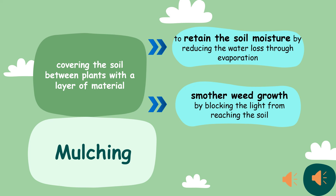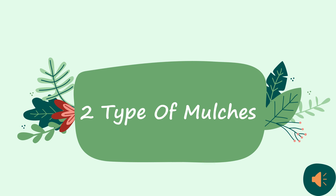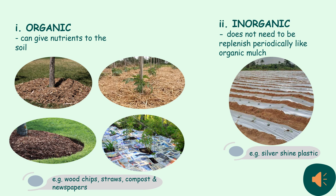Second is mulching. It is the act of covering the soil between plants with a layer of material, mainly to retain soil moisture and smother weed growth. There are two types of mulches: organic and inorganic. Organic mulch like wood chips, straw, compost, and newspaper can decompose and give nutrients to the soil. While inorganic mulch like black plastic, silver reflective plastic, crushed stone, and gravel does not need to be replenished as quickly.